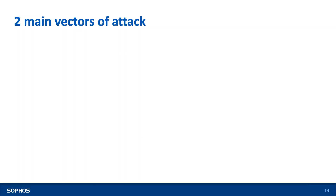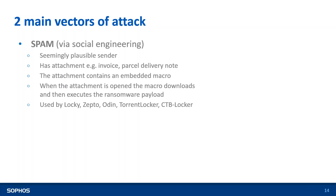Now let's understand the two main vectors of attack. The first is spam — more than 90% of ransomware attacks are through spam or social engineering. It understands what you require: if you're searching specific websites, cookies reveal your interests. Using that information, the attacker crafts a mail about your interests. Keywords grab your attention; attachments may be parcel delivery notes or invoices. The attachment contains an embedded macro — when you open it, it executes the ransomware payload.